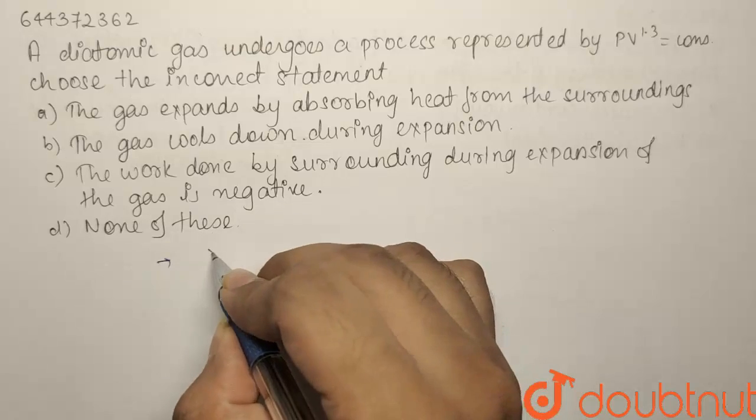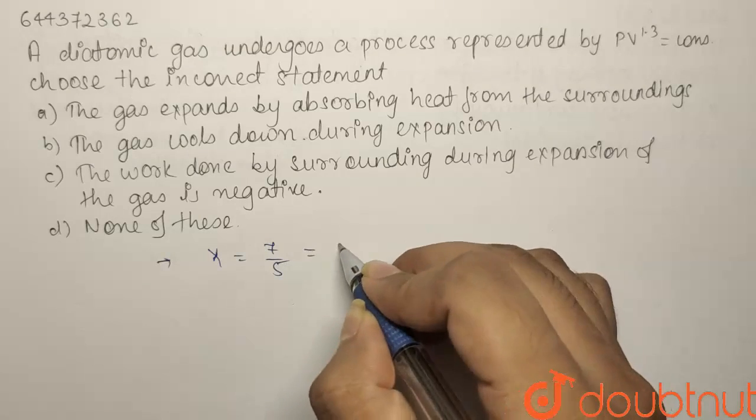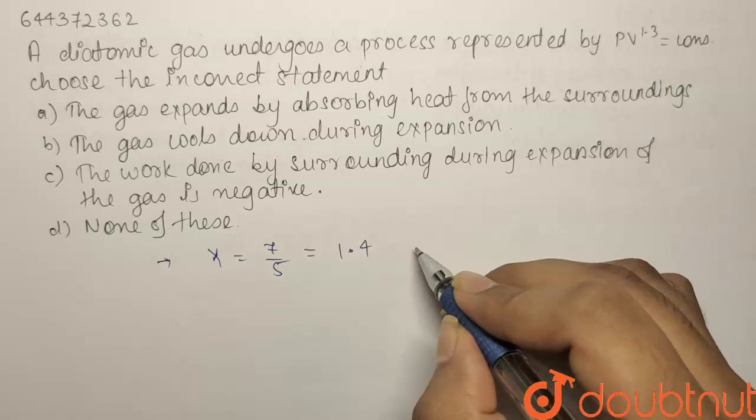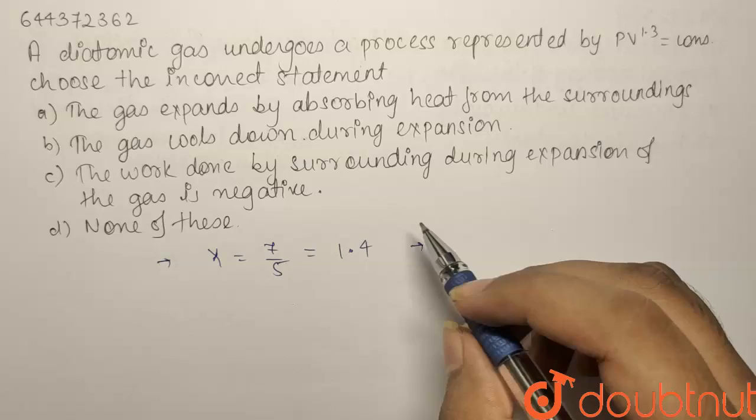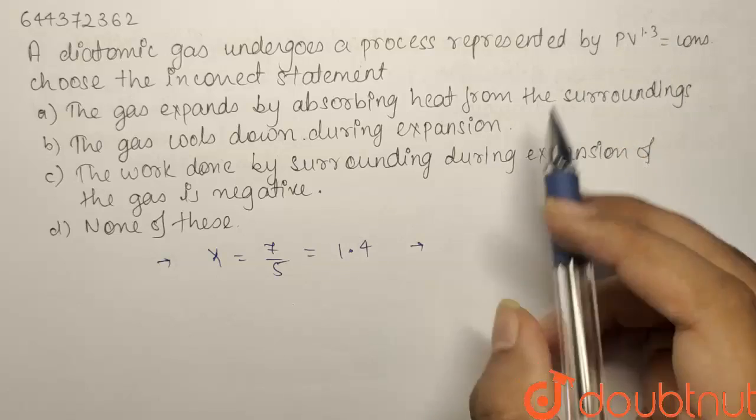Now it is a diatomic gas and for diatomic gas, gamma equals to 7 by 5, that is equals to 1.4. So it is not an adiabatic process because if it would have been an adiabatic process, it would be PV to the power 1.4.